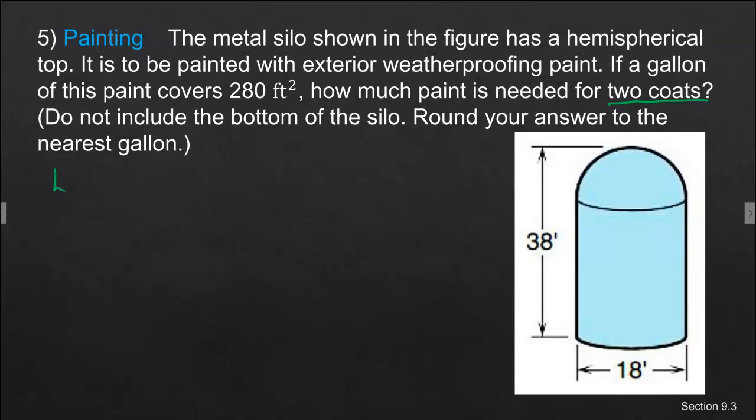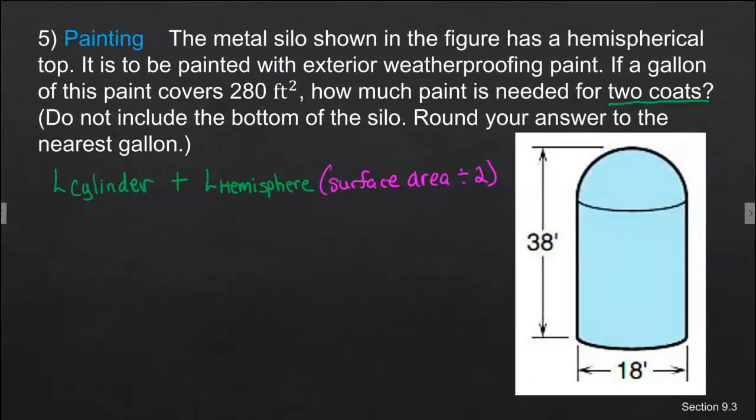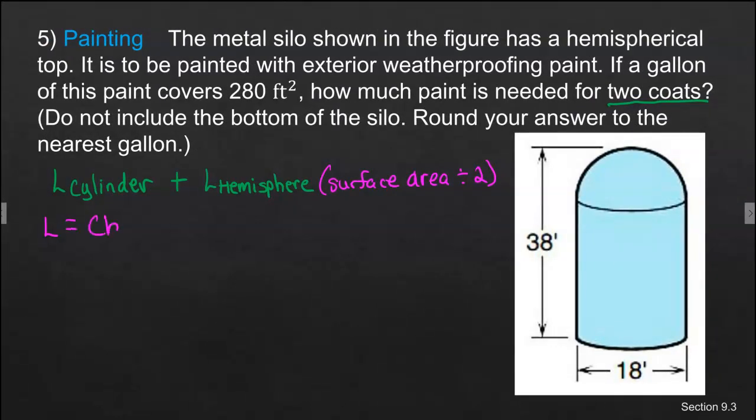Here's what we need. We need the lateral surface area of a cylinder plus the lateral surface area of a hemisphere. You may say, how do you do lateral? We can kind of look at it that way when it's a hemisphere, because we're not going to find the whole sphere. We're not going to find the top of it. So you can consider it like the lateral area. Basically though, it's going to be the surface area of the sphere divided by two. So circumference times the height for the cylinder, because it's just the lateral area of the cylinder.